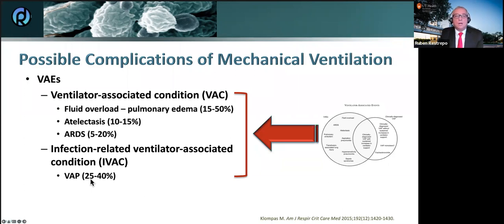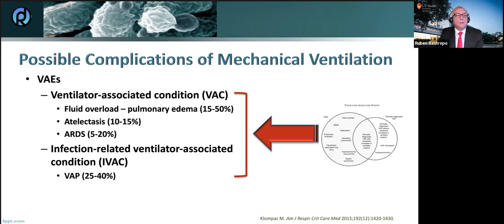Risk factors for VAEs include sedation — such as the use of Propofol — volume overload, high tidal volumes, high driving pressures. There is controversy about oral chlorhexidine, blood transfusions, patient transport, and even stress ulcer prophylaxis could be a risk factor. There have been a lot of changes over the last 10 years about what is good and what is not so good to prevent ventilator-associated complications.